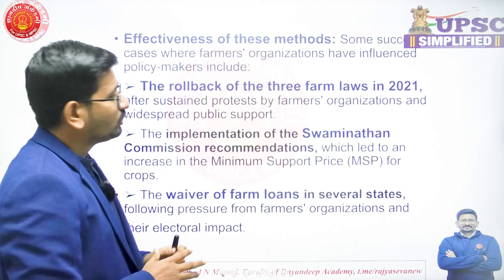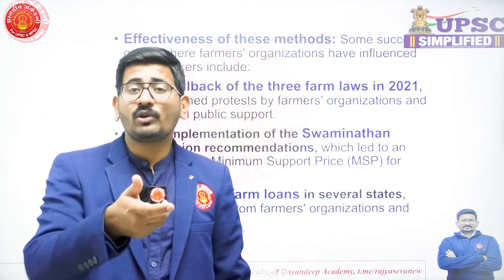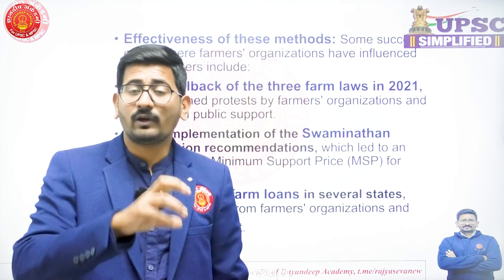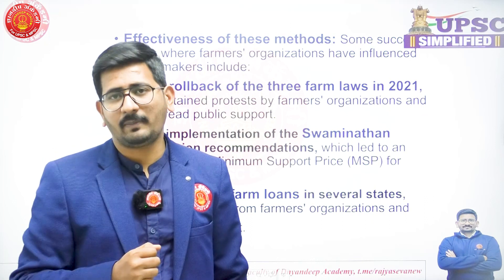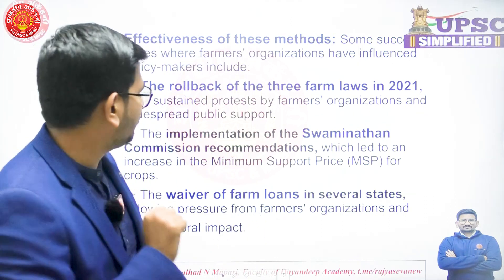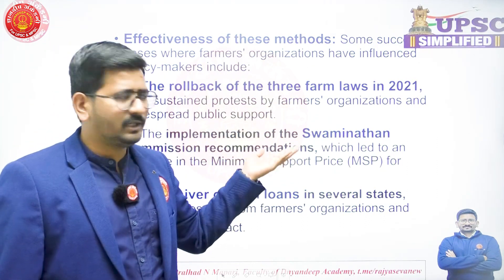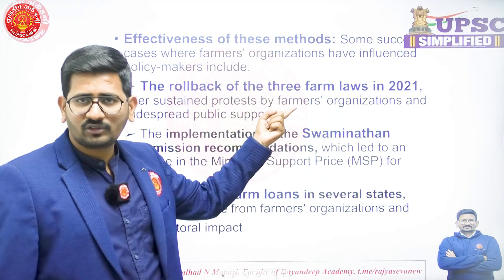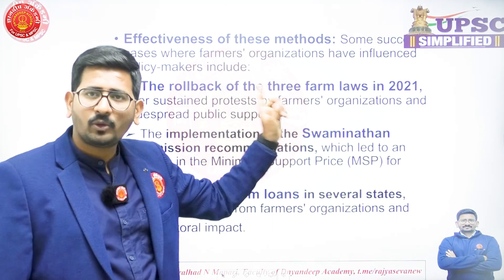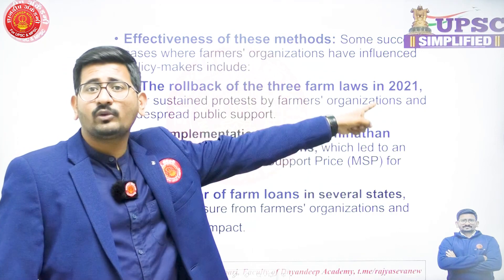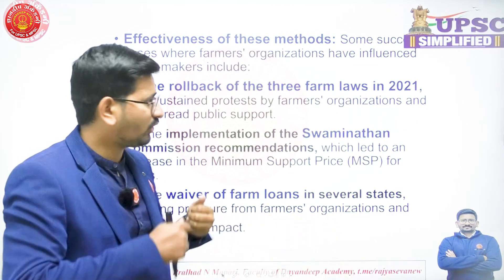Now the second part of the question: what is the effectiveness of these methods used by farmers organizations? The first example of effectiveness is the three farm laws: in 2021, farmers' agitation, protest, and demonstrations led the Union Government to withdraw these bills. This demonstrates effectiveness — because of the demonstration, the government had to withdraw the legislation.